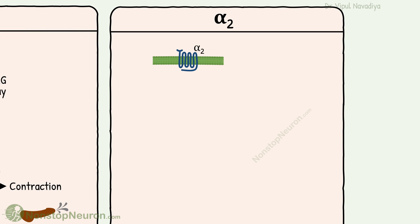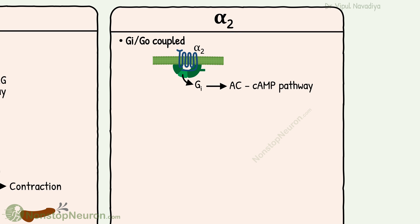Now let's talk about alpha-2 receptors. They are coupled to Gi/Go proteins. Thus, they act through the adenylyl cyclase-cAMP pathway. As they are Gi-protein-coupled, we can predict that they usually produce an inhibitory effect.